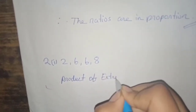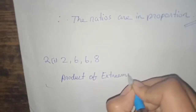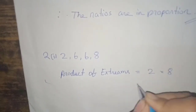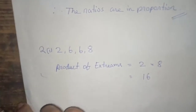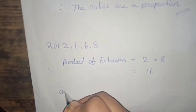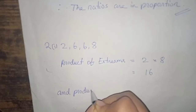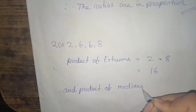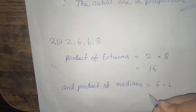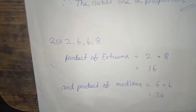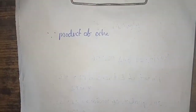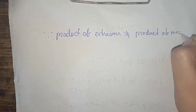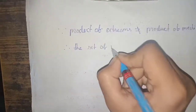Product of extremes is compared to product of medians. Product of extremes is 2 into 8, answer is 16. Product of medians is 6 into 6, answer is 36. Since product of extremes is not equal to product of medians, therefore the set of numbers are not in proportion.